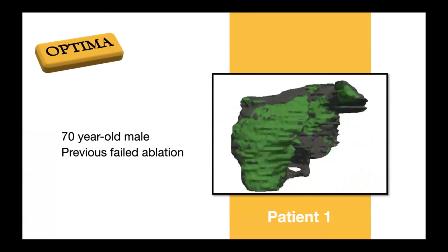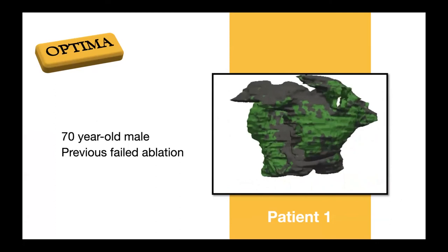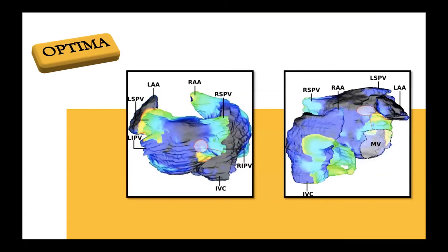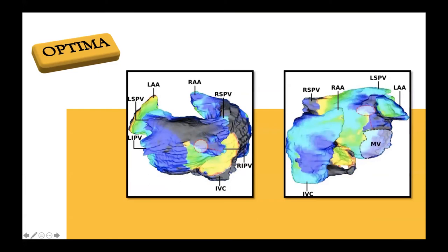Let me show you one of our patients. Everything is prospective and driven by simulations. This is the atria of the patient — the green is fibrotic remodeling. This patient had a previous unsuccessful ablation. We predicted one arrhythmia on one atrium — a recirculating wave — and another on the other side. So we had these two targets shown with circles, and the physicians went there and ablated.